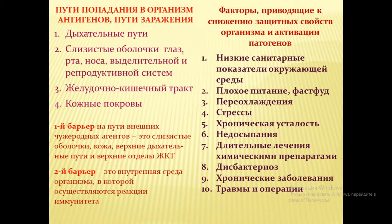Пути попадания антигена в организм: прежде всего дыхательные пути, затем слизистые оболочки не только рта и носа, но и глаз, выделительной и репродуктивной системы. Также желудочно-кишечный тракт и кожные покровы. Через кожные покровы тоже попадает очень много микроорганизмов, особенно если они повреждены.